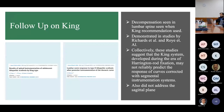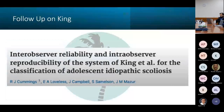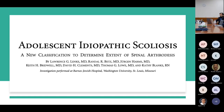In follow-up on King, there was a large decompensation in the lumbar spine when King's recommendations were used with modern segmental pedicle screw instrumentation systems. Collectively, studies found that King developed his system during the Harrington rod era and it would not reliably predict curve response with segmental fixation. It also had low inter-observer and intra-observer reliability, leading to the development of the Lenke classification.